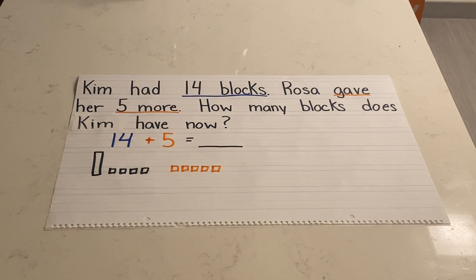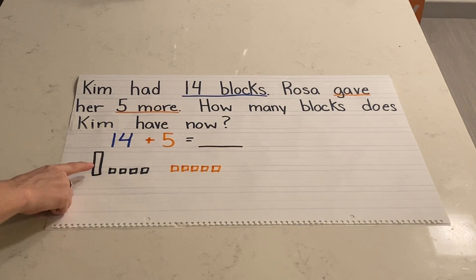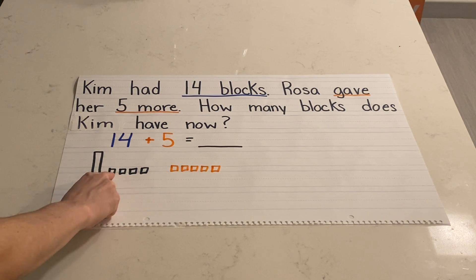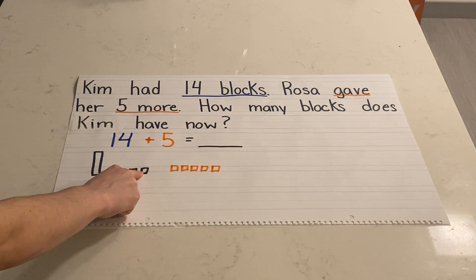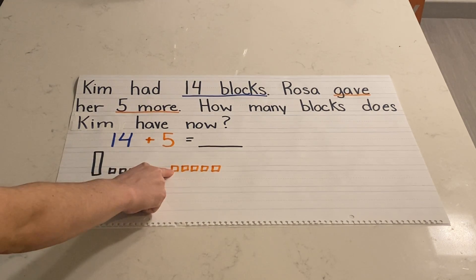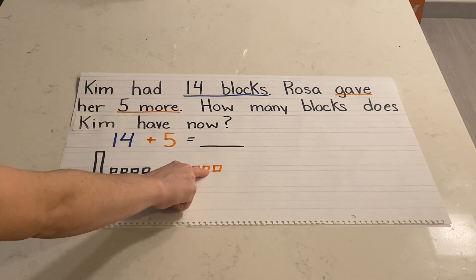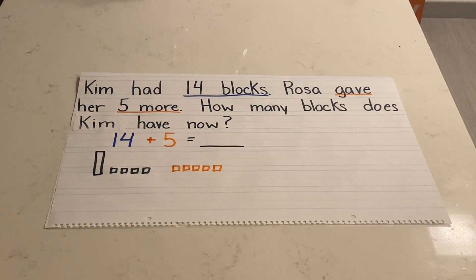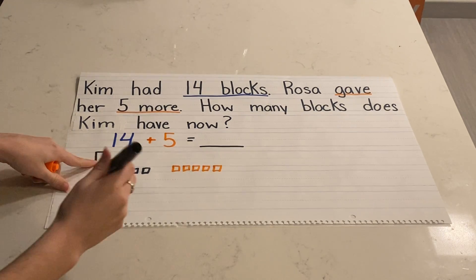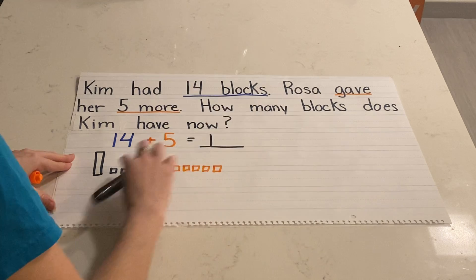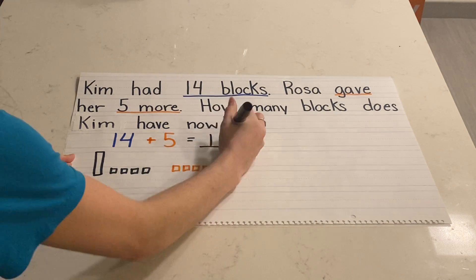Now my job is just to add them together. 10, 11, 12, 13, 14, 15, 16, 17, 18, 19. I know my answer is 19 — one group of 10 and nine extra ones.